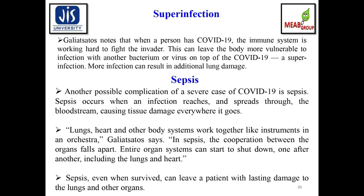When a person with COVID-19 has an overworked immune system, the body becomes more vulnerable to superinfection with another bacterium or virus, resulting in additional lung damage. Sepsis is another possible complication: it occurs when an infection reaches and spreads throughout the bloodstream, causing tissue damage throughout the body. In sepsis, the cooperation between organs breaks down, causing organ systems — including the lungs and heart — to shut down one after another, and even survived sepsis can leave lasting damage.